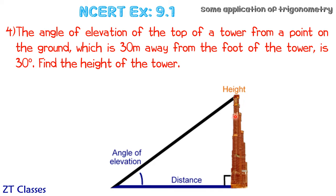So this tower is there and its angle of elevation is given as 30 degrees, and this distance from the foot of the tower to the point of observation is 30 meters. We have to find the height of the tower.